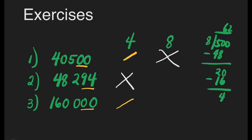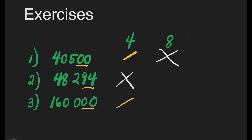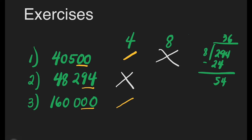For number 2, is 48,294 divisible by 8? Let's check the last 3 digits: 294 divided by 8. How many 8s are there in 29? That's 3. 3 times 8 is 24. 29 minus 24 is 5. Bring down 4. How many 8s are there in 54? That's 6. 6 times 8 is 48. Subtract: 54 minus 48 is 6. We have a remainder, so 48,294 is not divisible by 8.